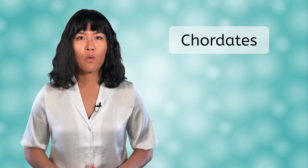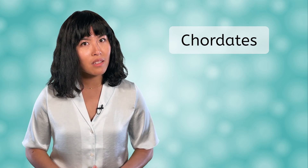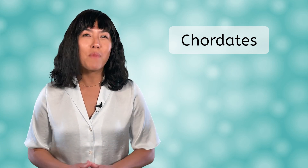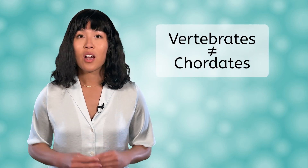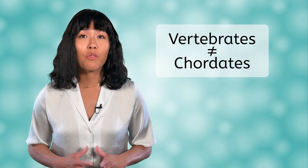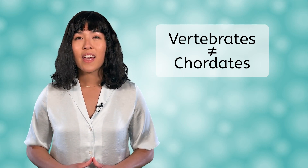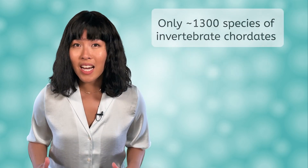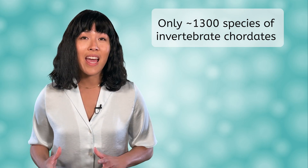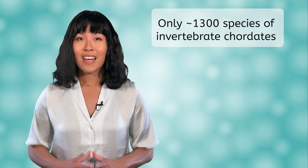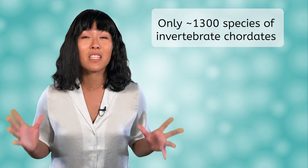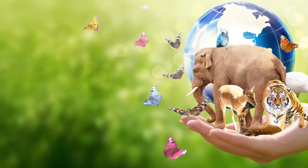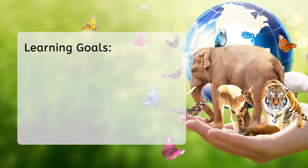Now you might be asking yourself, what are chordates? Well, that's a great question. Most people equate chordates and vertebrates, but in fact they are slightly different. Chordates is a more general term, so vertebrates are a specific type of chordate, and there are a small number — about 1,300 species — of animals that are chordates and also invertebrates. This number is extremely small when you remember that there are millions of species of animals in the world. But before we get started, let's look at our goals for this lesson.